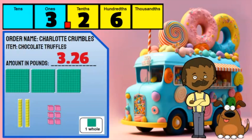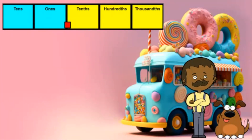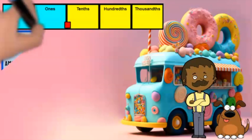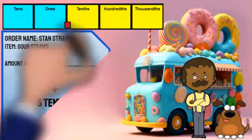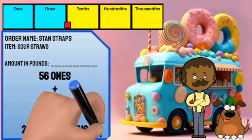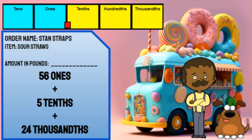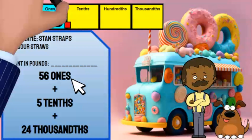Let's look at the next order. It's from Stan Straps. Stan wrote an expression to tell me how many pounds of sour straws he would like. First, the expression states there are 56 ones in his order.